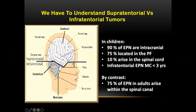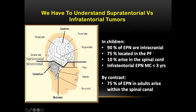Starting with simple anatomy: anything above the tentorium is supratentorial, and below is infratentorial. Infratentorial includes the cerebellum and posterior fossa. Very importantly, in children 90% of ependymomas are intracranial, and the majority of those arise from the posterior fossa — that is infratentorial.